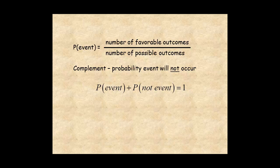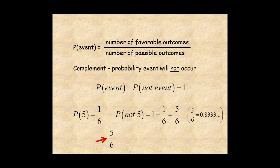So if the probability of rolling a 5 is 1 over 6, then the probability of its complement, not rolling a 5, is 1 minus 1 over 6, which is 5 sixths.